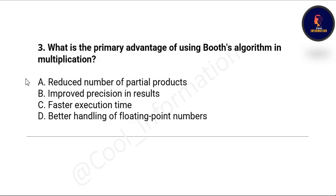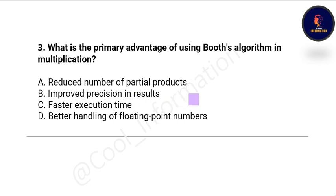Next question: what is the primary advantage of using Booth's algorithm in multiplication? Options are: reduced number of partial products, improved precision in results, faster execution time, and better handling of floating point numbers. The correct option is option A — reduced number of partial products.